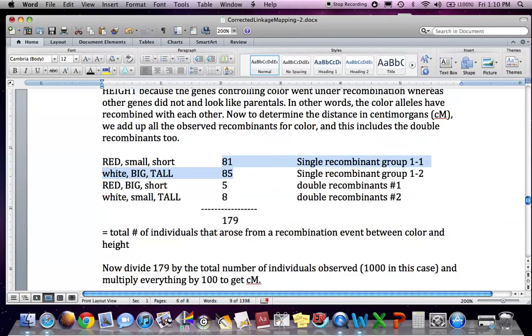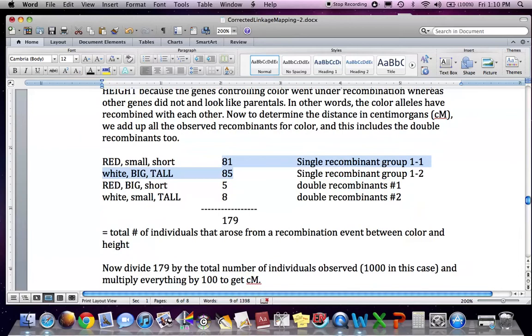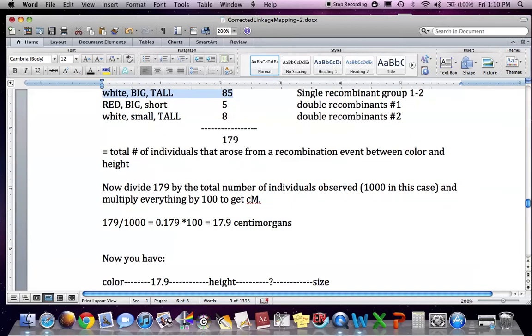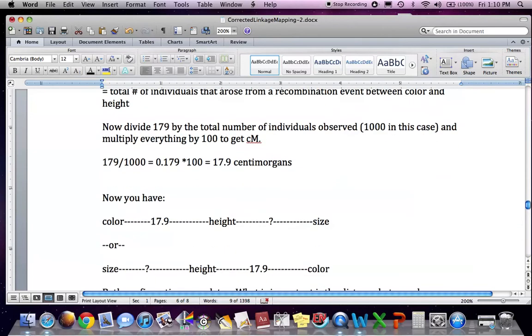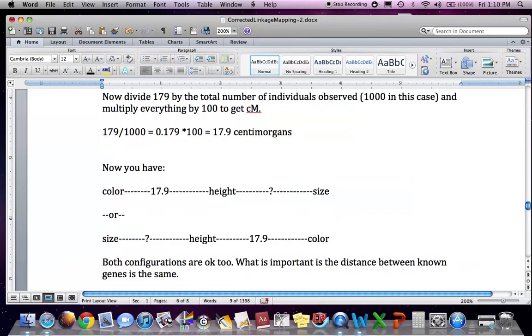So the total number of individuals that arose from a recombination event between color and height is 179. And now you just do that, 179 divided by 1000 cases for example, and now you have color 17.9 to height. But you definitely don't know what the distance between height and size is. And this orientation is also correct. Both configurations. What is important is that distance between known genes is the same.